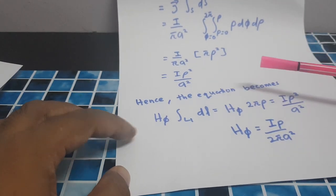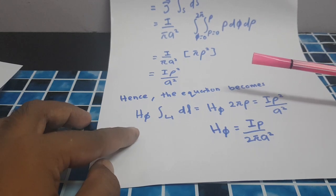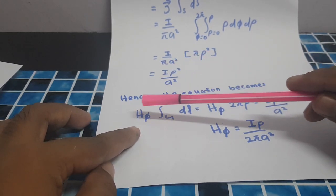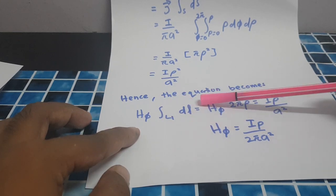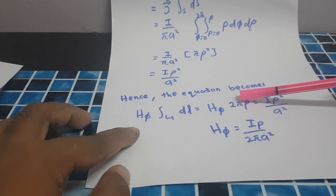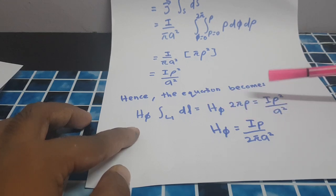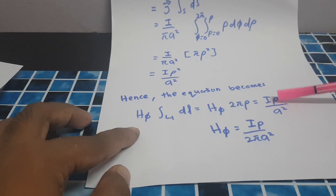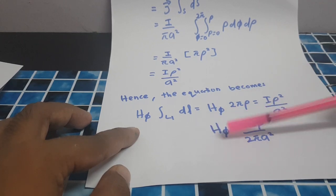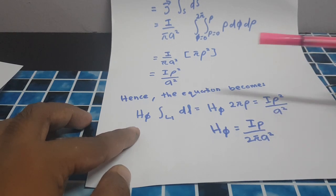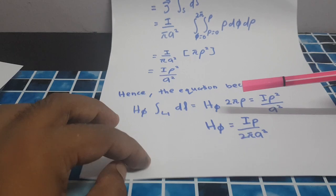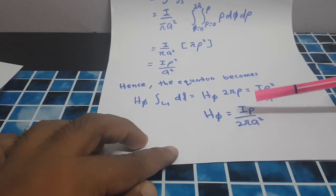From I enclosed, we can find the magnetic field in the φ-direction. Applying Ampere's Law, H_φ times the path integral dL equals H_φ · 2πρ, which equals I enclosed = I·ρ² / A². Therefore H_φ equals I·ρ / (2πA²). So for the region ρ between 0 and A, H_φ is expressed in terms of radius A and radius ρ.